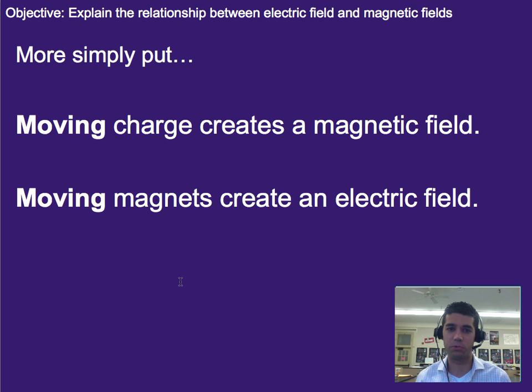So to put this more simply, moving charge, which is a changing electric field or causes a changing electric field, creates a magnetic field. So if you move a charge around, it creates a magnetic field. Similarly, if you move a magnet around, it creates an electric field that can interact with charges. So in this case, you can use an electric field to create a magnetic field, and you can use a magnetic field to create an electric field.